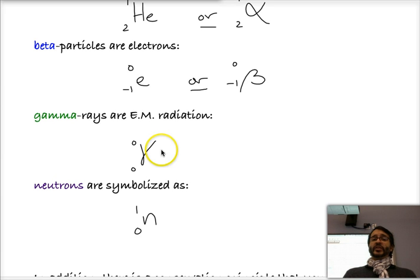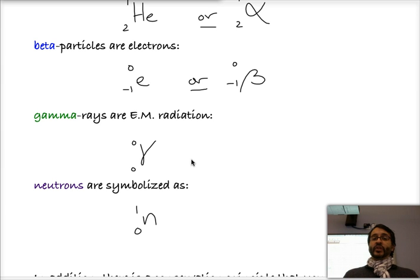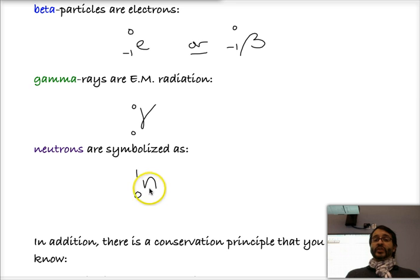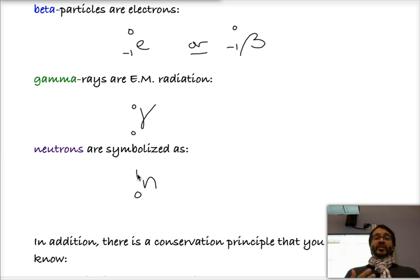Gamma rays are a little bit different, because gamma rays are electromagnetic radiation and therefore have neither protons nor neutrons. They actually have no mass — they're just energy. So we're just going to write the symbol for gamma, and a 0 for the mass number, and 0 again for the atomic number. That means they will not affect the nucleus itself. Neutrons are symbolized by a 1 and a 0 with a lowercase n. 0 in the lower left corner because there are no protons, and we put a 1 on top because the mass number equals the number of protons plus the number of neutrons — so we have 1 neutron.